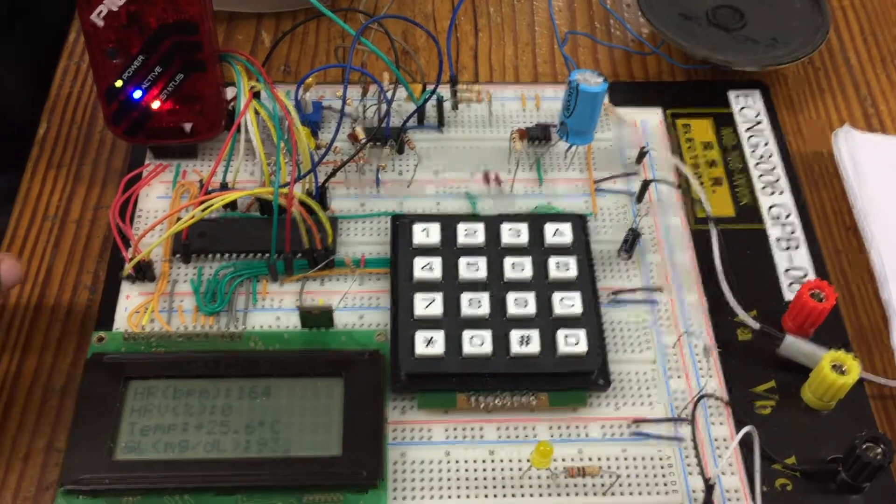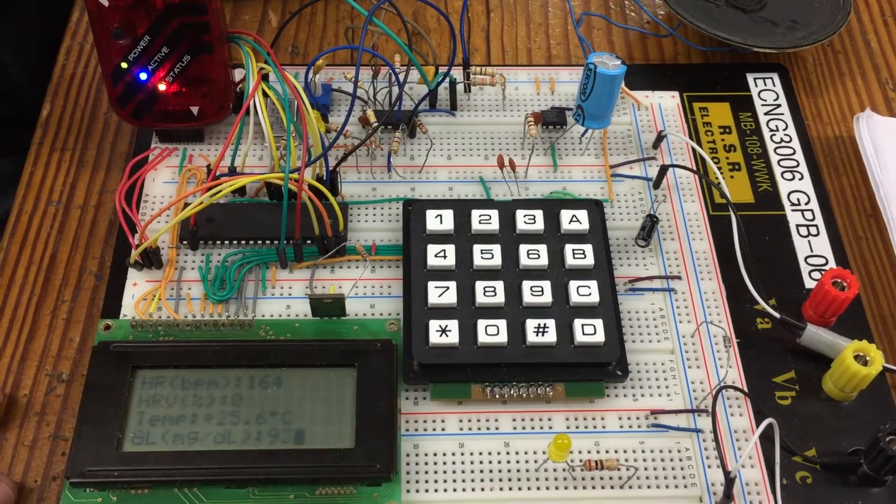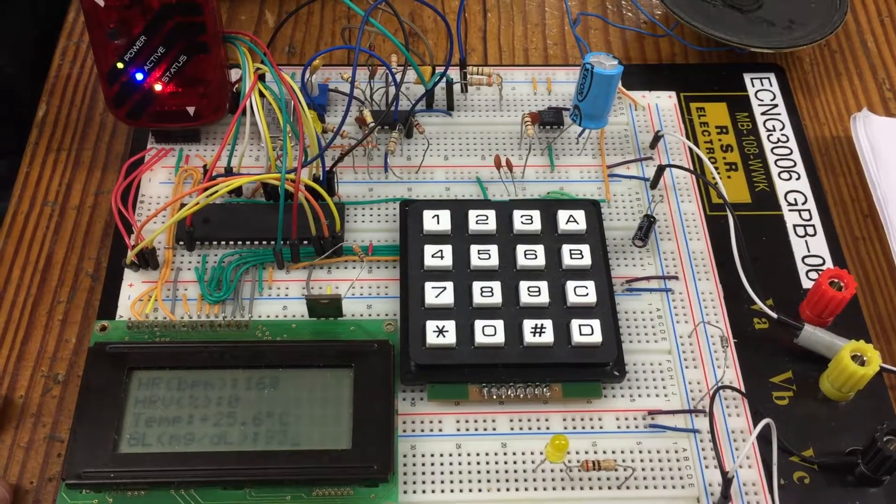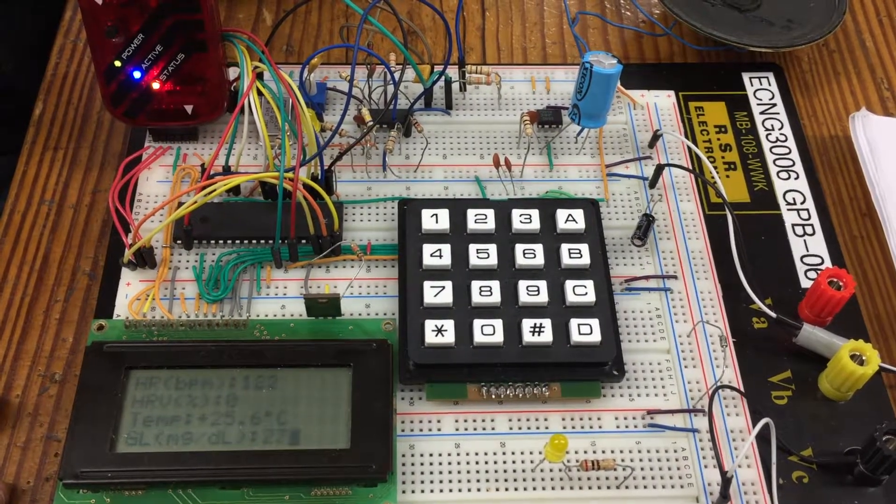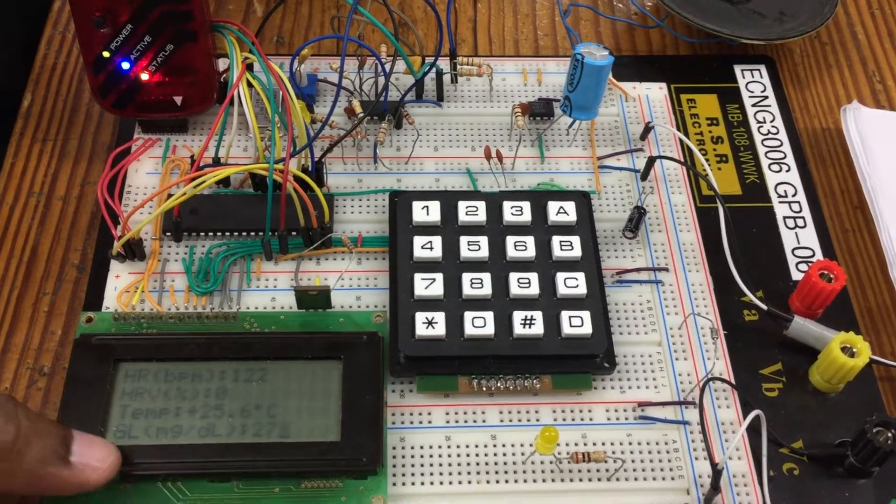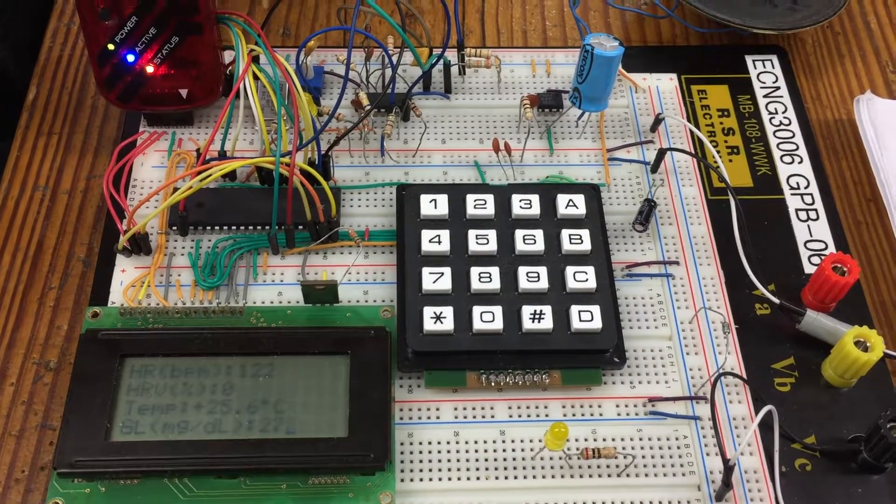And once the heart rate drops below that value, it should turn off the alarm. So you can see that worked as expected. Well now the glucose is below the range so it will sound the alarm.